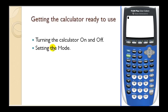The first thing we need to know how to do is to turn the calculator on. In the lower left-hand corner, there is an on button. So if we press on, the calculator will turn on. To turn it off, we have to press second and then on again. You can see the off right above the on button. So let's go ahead and turn it back on.